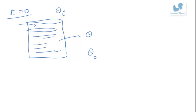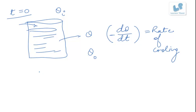And the rate of cooling of this liquid, that is d theta by dt with a minus sign, is the rate of cooling. Now according to Newton's law of cooling, this rate of cooling is directly proportional to the temperature difference between the substance and the surrounding. So that will be equal to K times delta theta, that is difference in temperature, which can be written as theta minus theta naught.